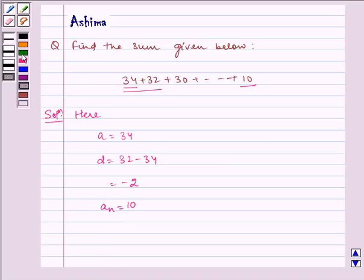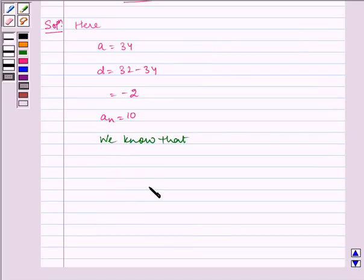We know that An is equal to A plus N minus 1 times D. Now substituting the values in this, we get An is equal to 10, which is equal to A, that is 34, plus N is unknown, D is minus 2. So here we have to find the value of N.